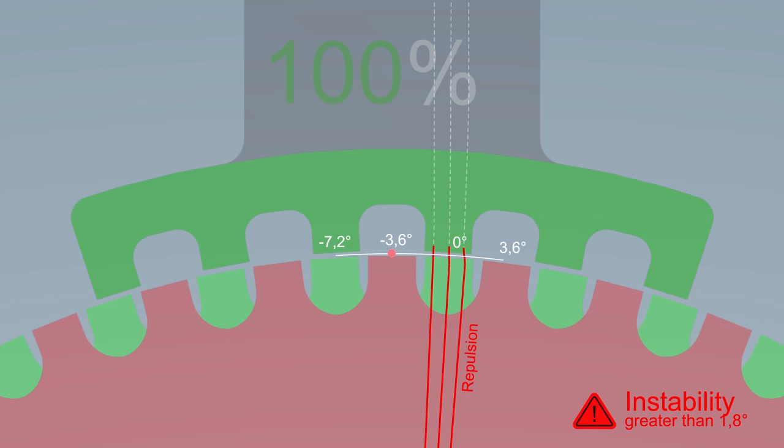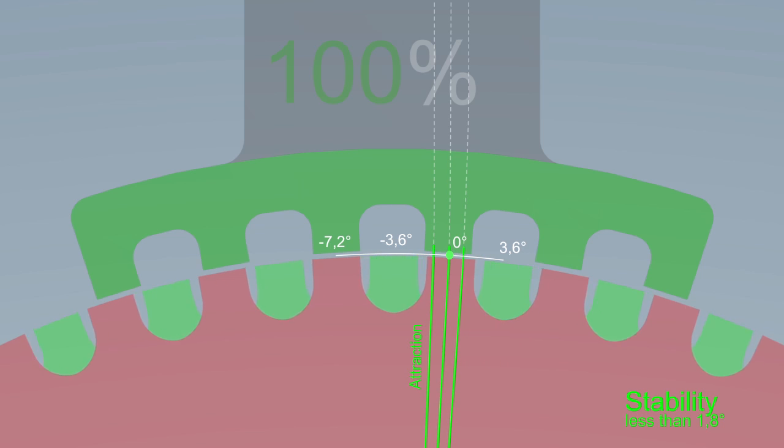While running, the rotor usually loses 7.2 degrees or a multiple thereof compared with its initial position or it falls completely out of step. Here, the rotor reverts to its stable starting position of 0 degrees due to its smaller outer load torque.